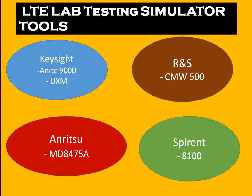There is one more company, Anritsu, which has a product called MD8475A. This tool can also handle 2G, 3G, and 4G testing — inter-frequency, inter-RAT handover, cell selection, reselection, camping procedures, IMS, and all these things. You just need to connect the device with an RF cable. The fourth company is Spirent, and their product is the 8100. With the help of this you can also perform various kinds of testing.